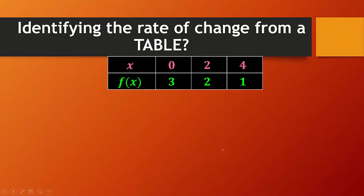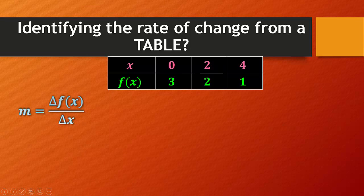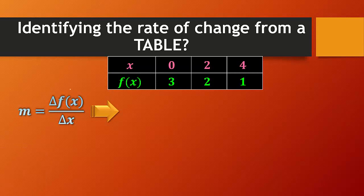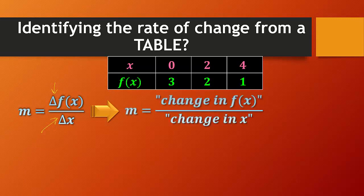To identify the rate of change from a table, all you have to do is use this formula. So now this right here means difference. Let me go ahead and put that back on pen. So this right here is the difference. Okay, that symbol. Change in f, f(x), change in x. Okay, so it's just, in this case, you pick two points.